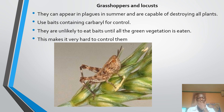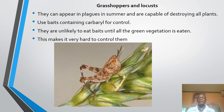How can we control locusts? You should know that it is very hard to control them. A major control method is by use of baits. However, these locusts usually eat all the green vegetation of the crop first before they eat the bait. So by the time you control the pest, it has already caused harm — that is the hardship farmers face when dealing with locusts.